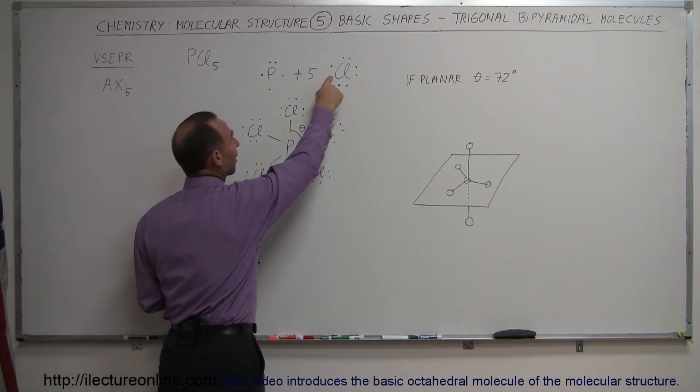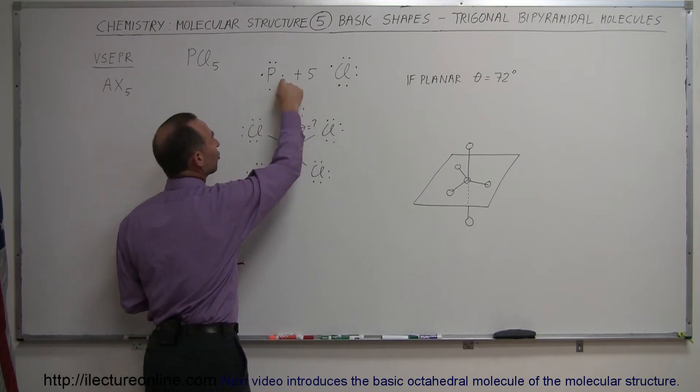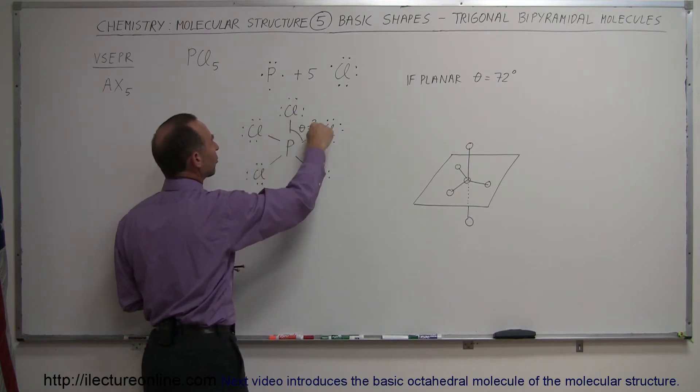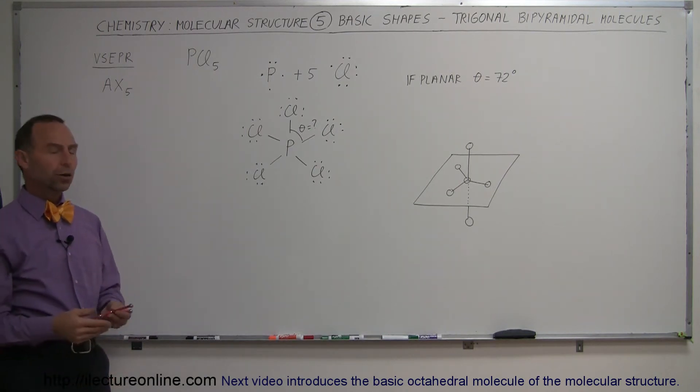Each of the chlorine atoms would like to have one additional electron to fill its valence shell, so it's going to have a sharing arrangement. In this case there's going to be five of those sharing arrangements making those five bonds, those are single bonds. Now the question is, what will that molecule look like?